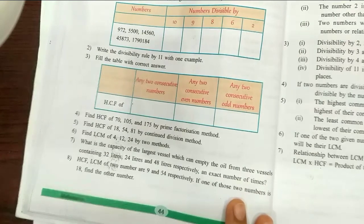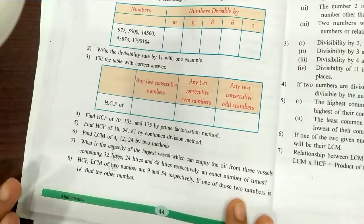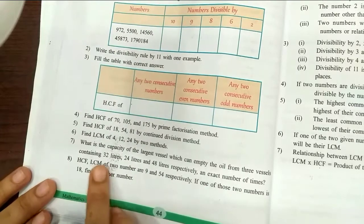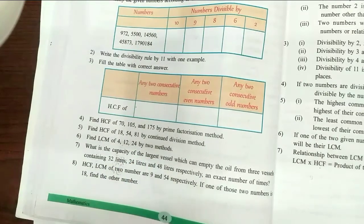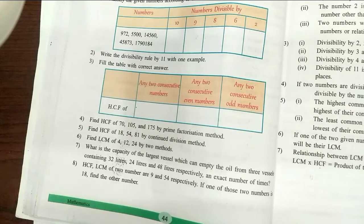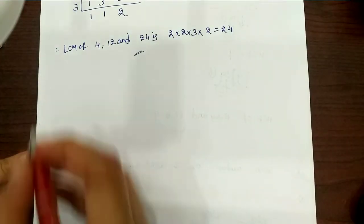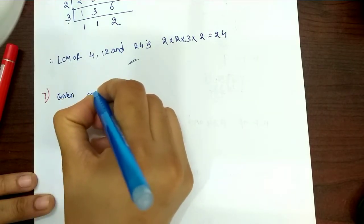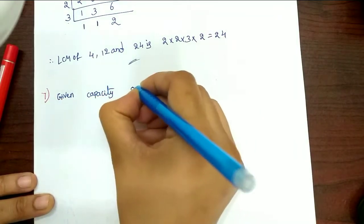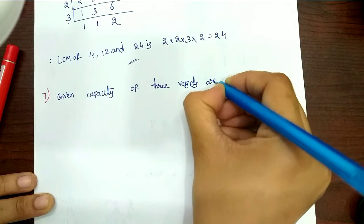So exactly, what is the result? So the answer is: you can divide the number. If you are using this problem, you can use HCF. HCF is very easy to use with division. So we are using HCF division to solve this problem. Given capacity of 3 vessels are 32 liters.